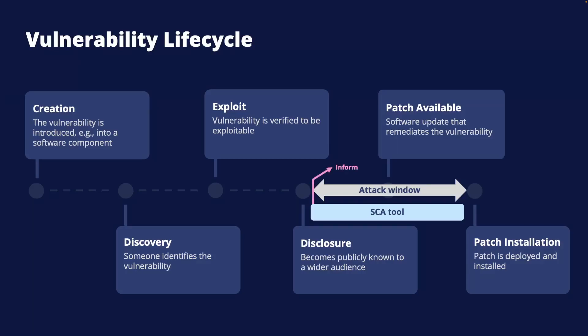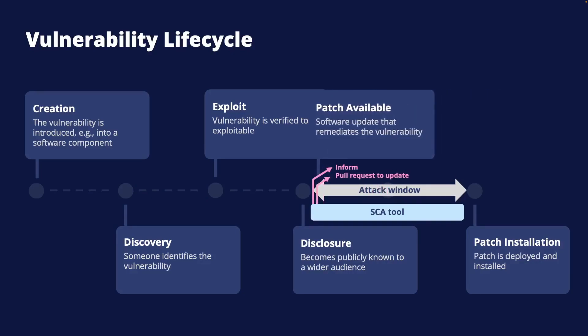A software composition analysis tool can minimize the attack window by fully automating the identification of newly disclosed vulnerabilities, mapping them to the software, and verifying if the software is vulnerable. When a vulnerability is disclosed, users and developers can be immediately informed, and as soon as a patch is available, a pull request to update the software can be generated. In some cases it can be just minutes between disclosure and deployment of the patched component.